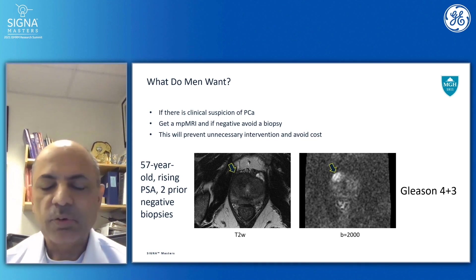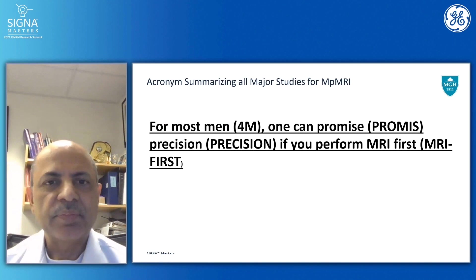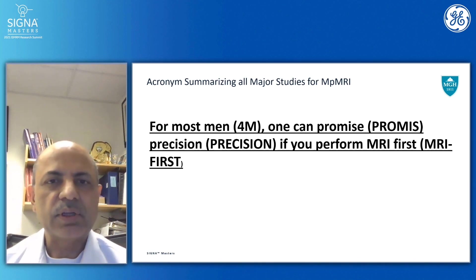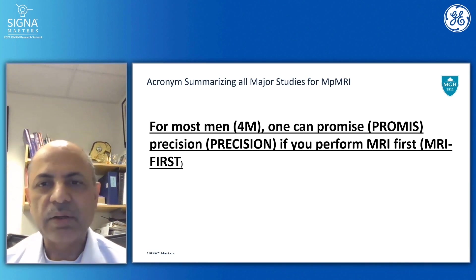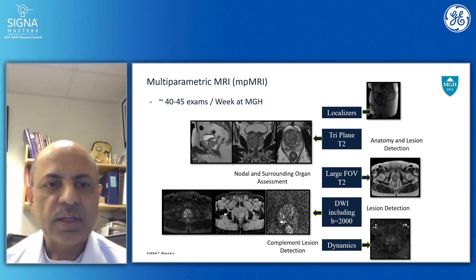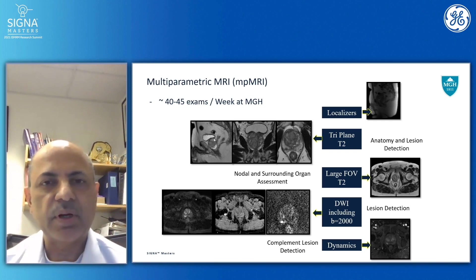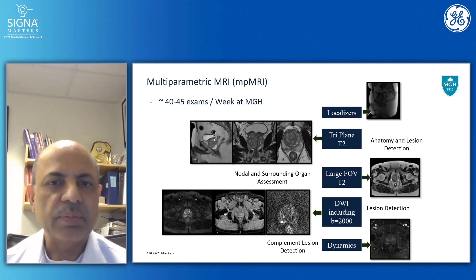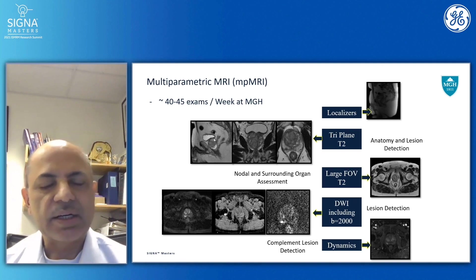That was Gleason 4+3 cancer in the end. Looking at the published literature, this sentence summarizes all the major papers: for most men, one can promise precision if you perform MRI first — that is, MRI before biopsy. Those were the four key papers that came out in the last three to four years attesting to the fact that multiparametric MR can do a very good job at detecting cancer prior to undergoing biopsy, and therefore you can target that area specifically.